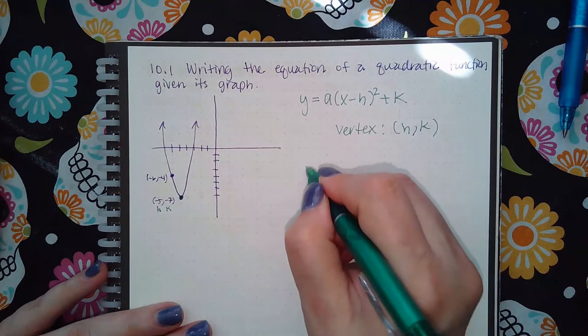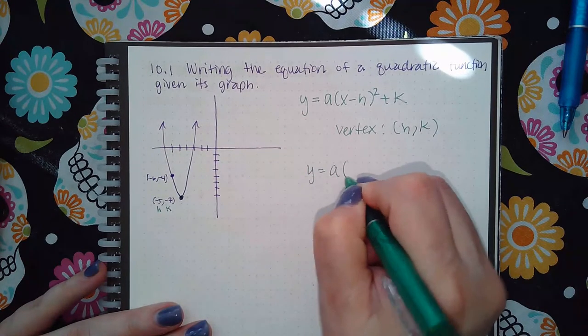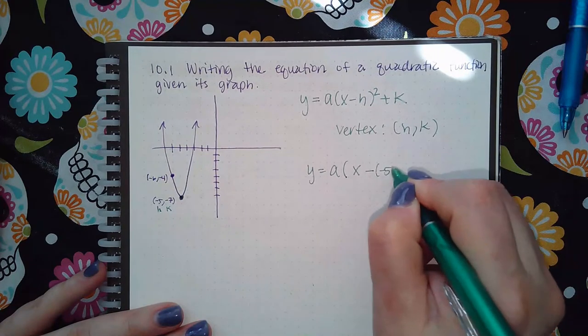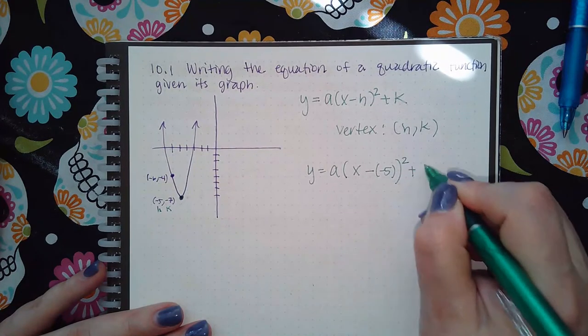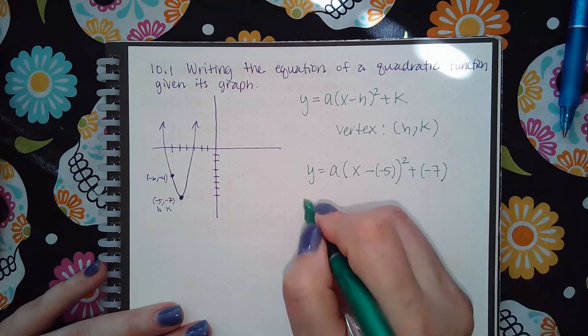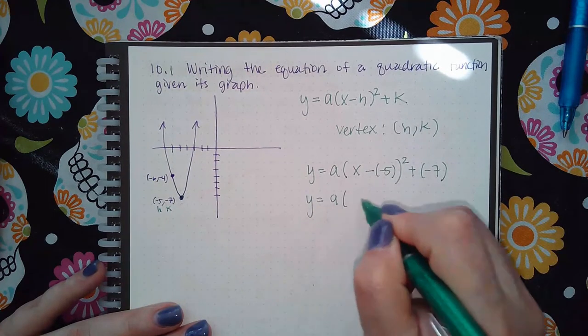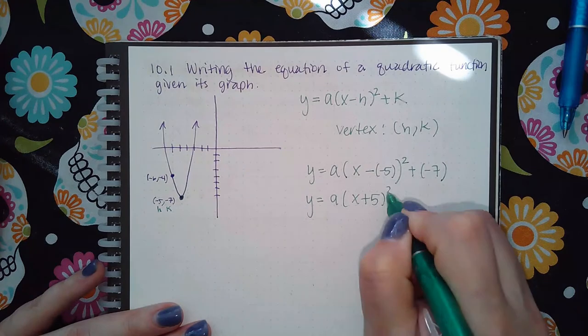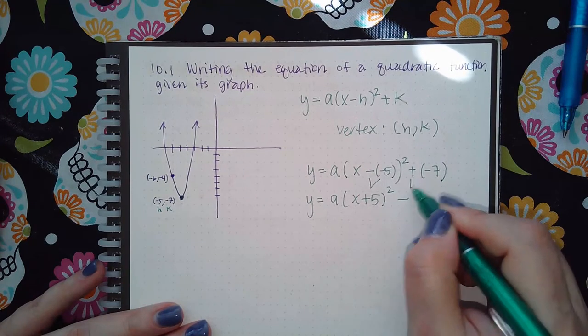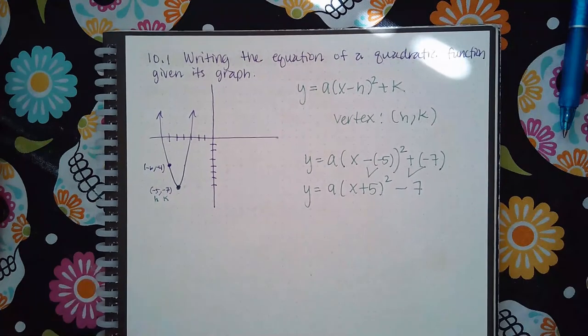If I plug that in as it is, I have this formula: x minus a negative 5 squared plus a negative 7. If I clean that up with double signs, I get x plus 5 squared and then minus 7. Those two signs multiply them together to get the actual sign.